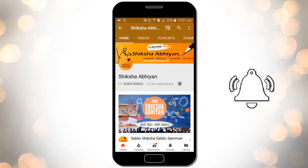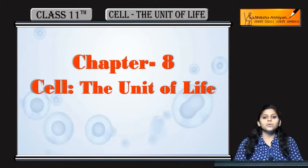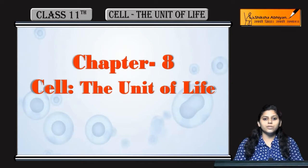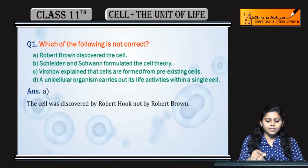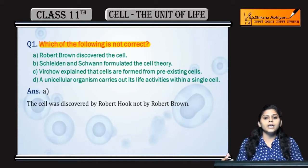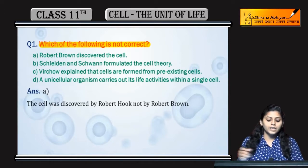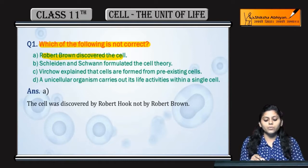Hello everyone, let's start with the question answers of chapter 8. The very first question is: which of the following is not correct? The very first one is: Robert Brown discovered the cell.